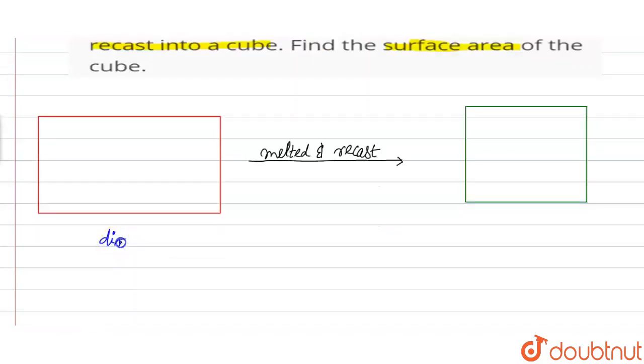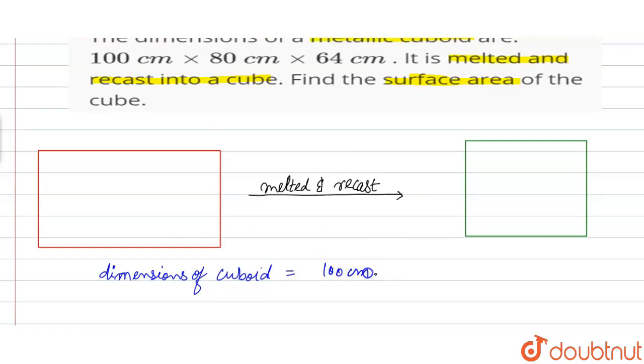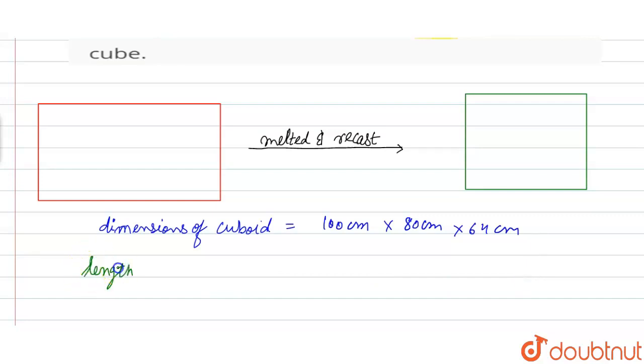Dimensions of cuboid is equal to 100 centimeters into 80 centimeters into 64 centimeters. So length of cuboid is equal to 100 centimeter, let it be l. Breadth is equal to 80 centimeter, that is b.